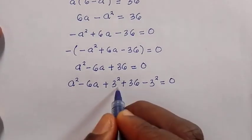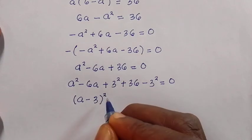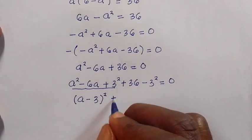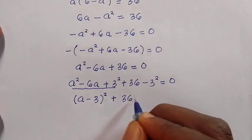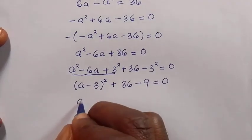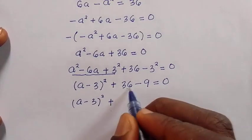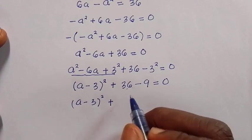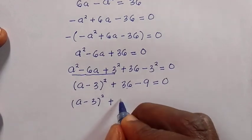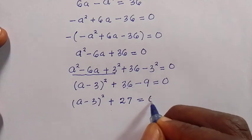Combining terms, we get (a minus 3) squared, plus 36 minus 3 squared — which is 36 minus 9 — equals zero. So we have (a minus 3) squared plus 27 equals zero.